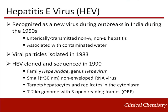Hepatitis E was first recognized as a new virus during outbreaks in India during the 1950s. Healthcare workers and epidemiologists called this new virus enterically transmitted non-A, non-B hepatitis. The seasonality of the outbreaks, occurring more often during monsoons, provided a clue that contaminated water was a major source of disease transmission.